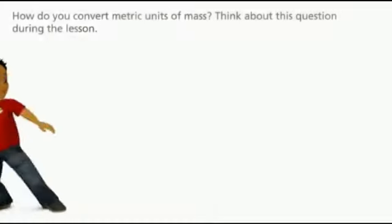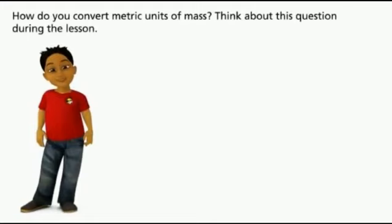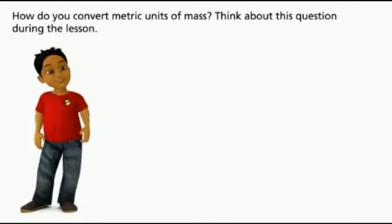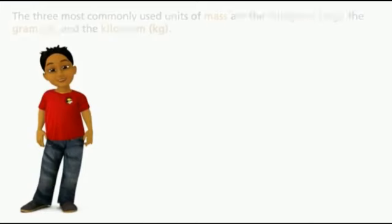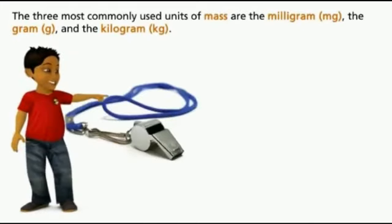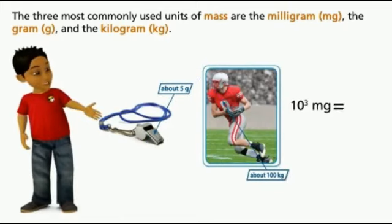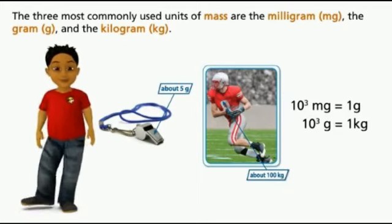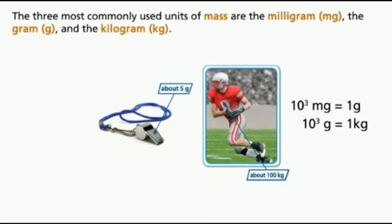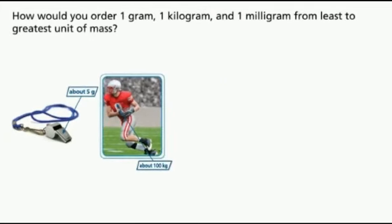How do you convert metric units of mass? Think about this question during the lesson. The three most commonly used units of mass are the milligram, the gram, and the kilogram. Converting metric units of mass is like converting other metric units. How would you order 1 gram, 1 kilogram, and 1 milligram from least to greatest unit of mass?